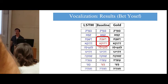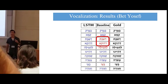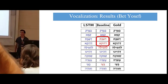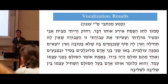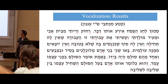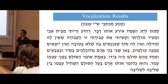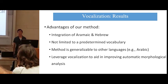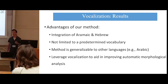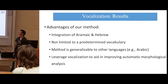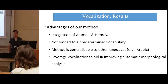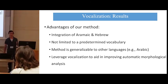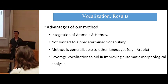The LSTM, on the other hand, manages to generalize from words it has seen, and predicts a reasonable set of vocalization marks for words it has not seen. We also tested our auto-vocalizer on a more modern piece, a paragraph from the writings of the Chofetz Chaim, and here you can see it vocalized. To summarize, our method managed to learn an integration of both Aramaic and Hebrew in a single model. Our method is also not limited to a predetermined vocabulary, is not Hebrew-specific, and can be generalized to other languages — for example, Arabic. We hope to leverage vocalization to aid in automatic morphological analysis.